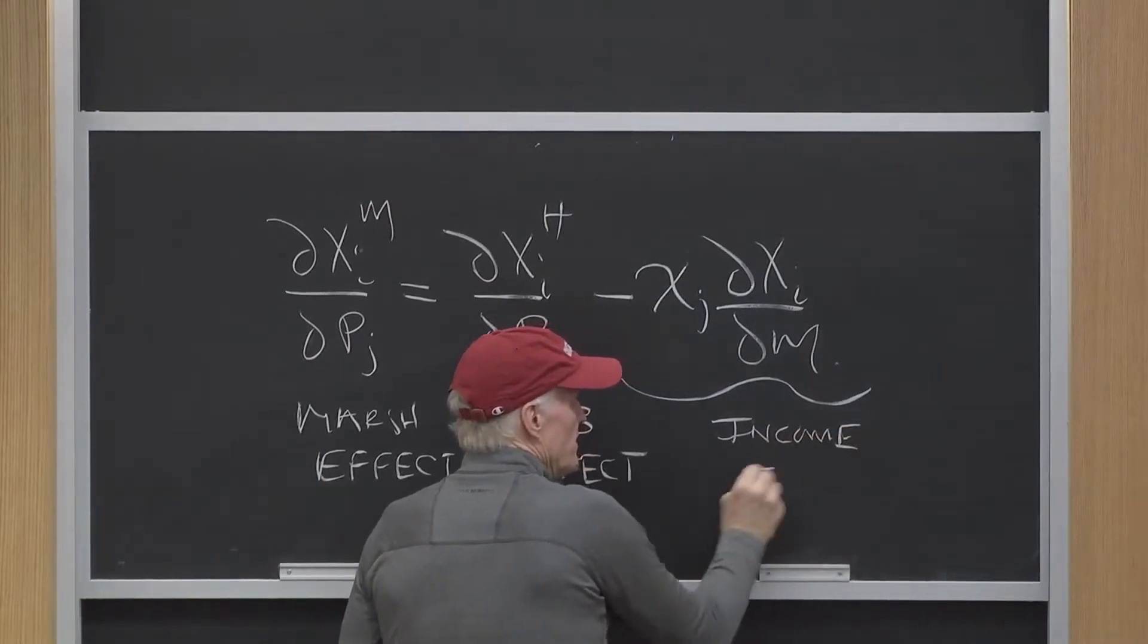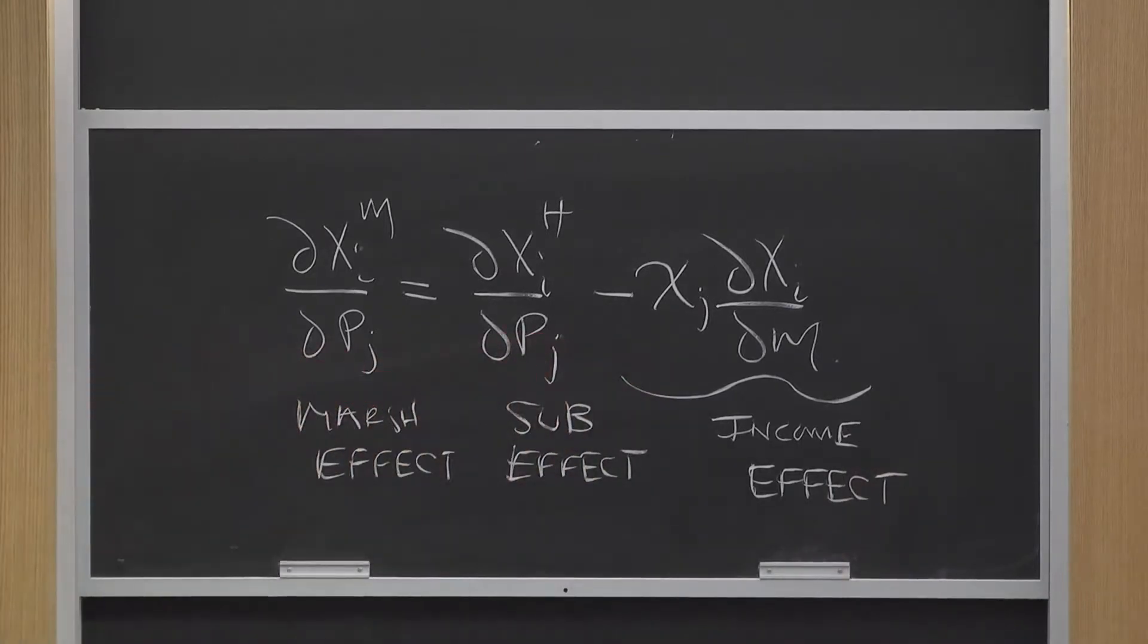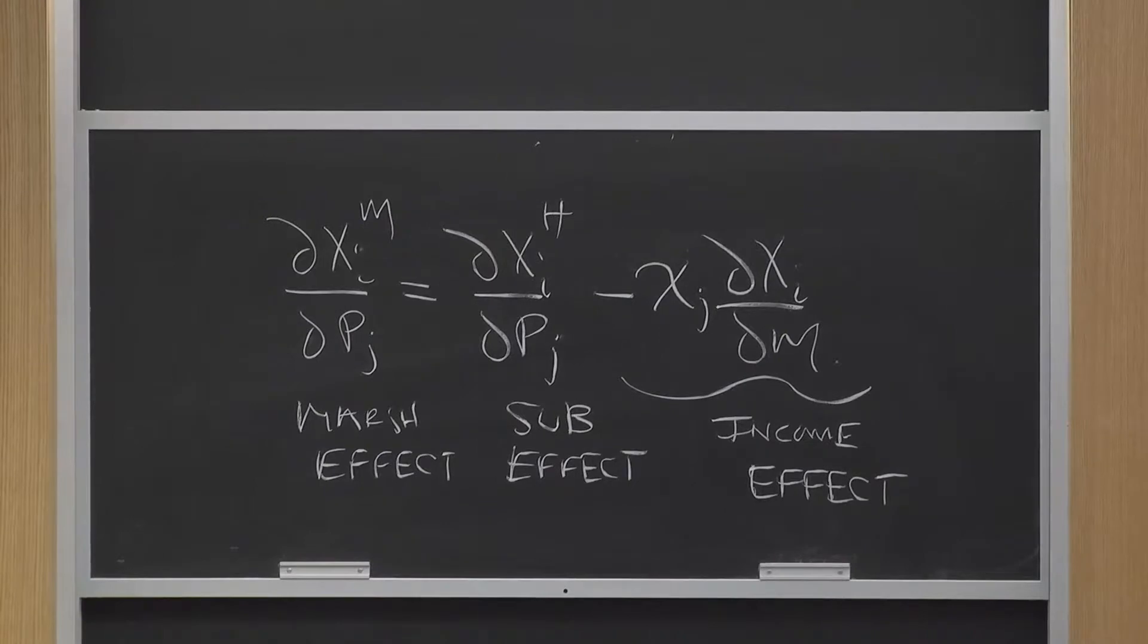And where does this income effect come from? Why does it have the form it does? Anybody explain where this income effect comes from, and why it has the form it does?